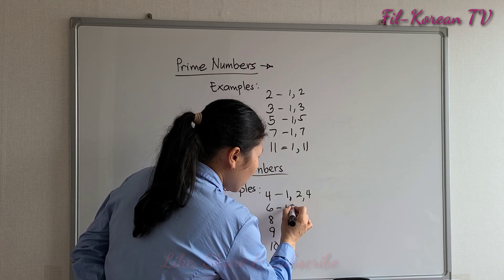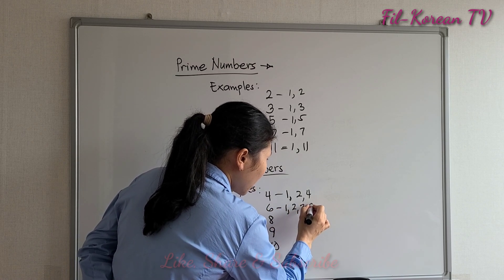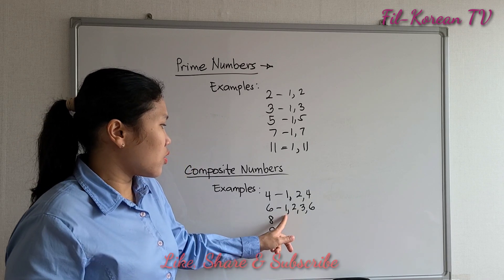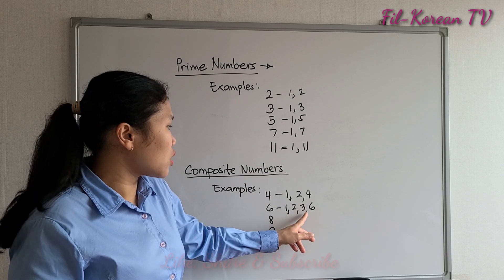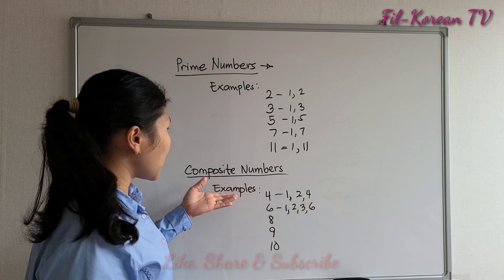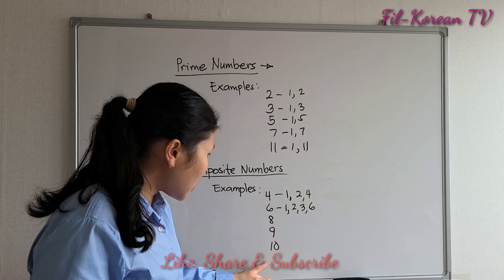Then, one, two, three, and six. There are four factors. Six has four factors: one, two, three, four. More than two. So, composite numbers. Same with these numbers. They have more than two factors.